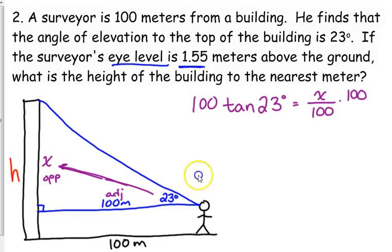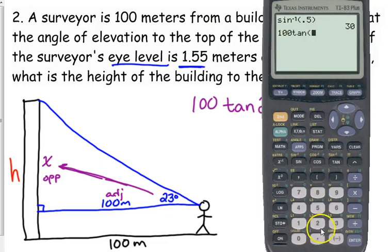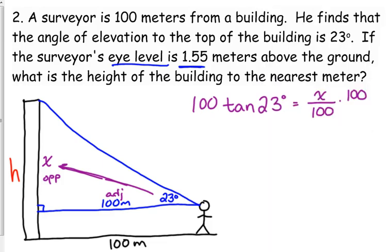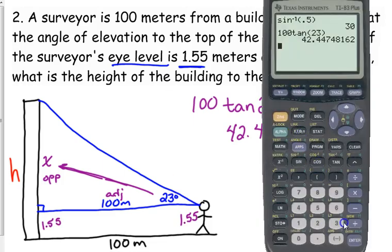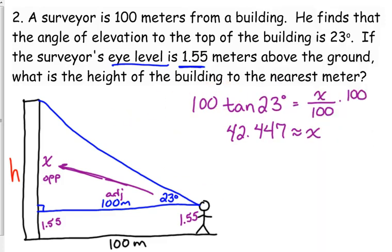We just multiply both sides by 100. 100 tangent of 23, 42.447. That's approximately x, but that is not the entire height. What do we need to add to that to get the height? The 1.55 meters, the height of the man, plus that x value right there will give us the entire height of the building. So I'm just going to add 1.55 to my answer and it asks us to the nearest meter so we can round that up to 44. The height is approximately 44 meters.